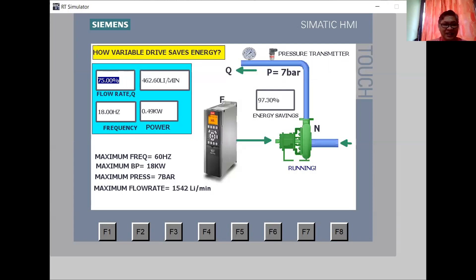If I have a 75% demand, then you are actually using 45 hertz, 7.59 kilowatt, 1,056.50 liters per minute, and you have an energy saving of 57.81%. This is how energy saving is used in VFD application.